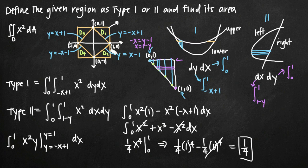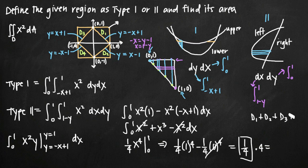You could independently find d sub 2, 3, and 4 and treat each as type 1 or type 2 integrals — it works either way. But as you can see, d sub 1 is the same area as d sub 2, 3, and 4. So for this problem, d sub 1 + d sub 2 + d sub 3 + d sub 4 equals 4 times d sub 1, which is 4 times 1/4, equal to 1. That's the area of the entire region.